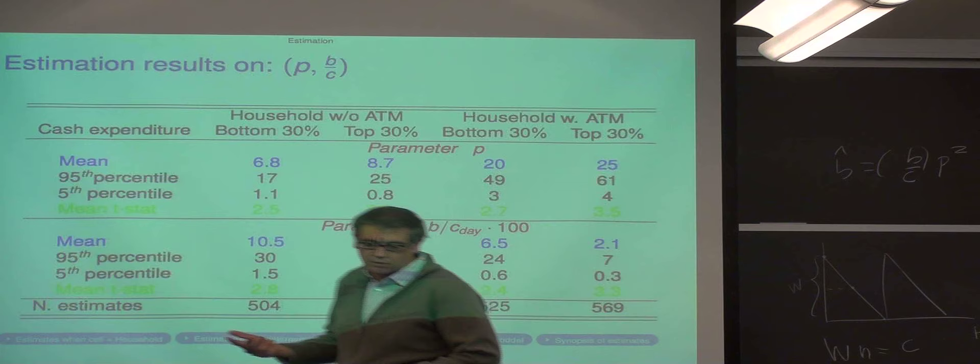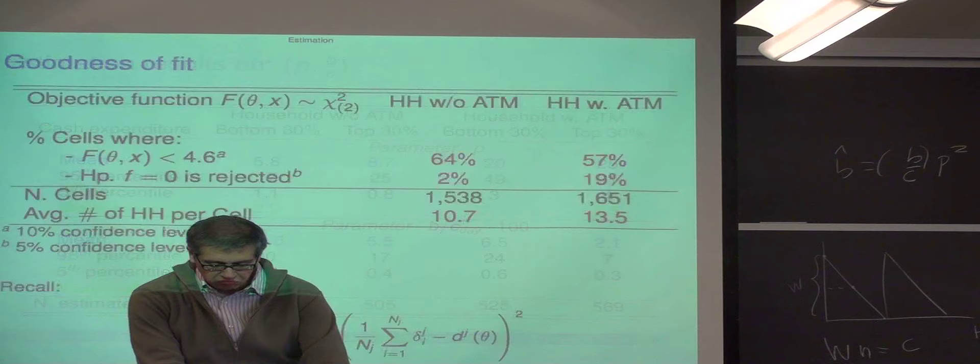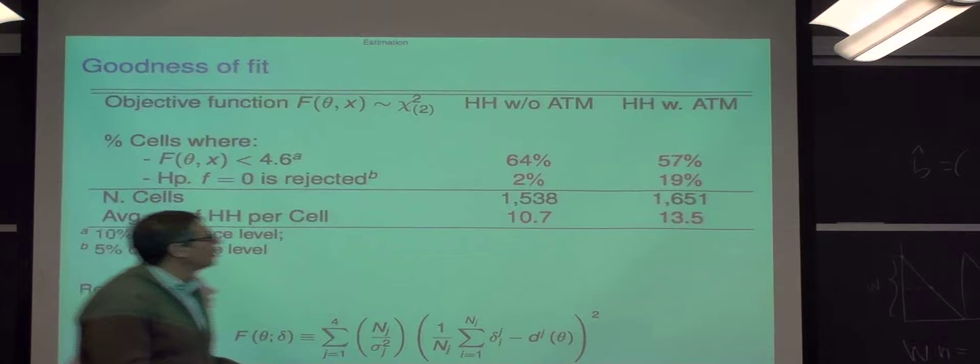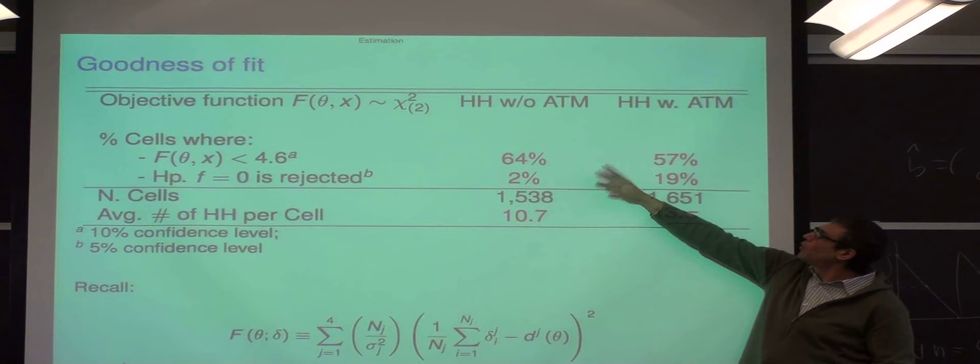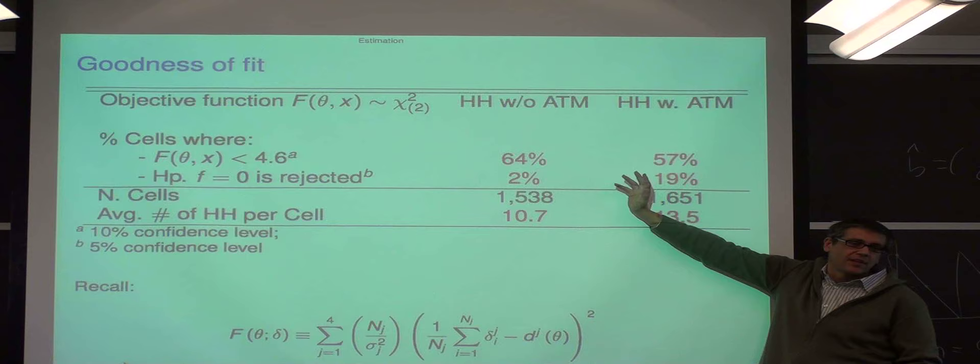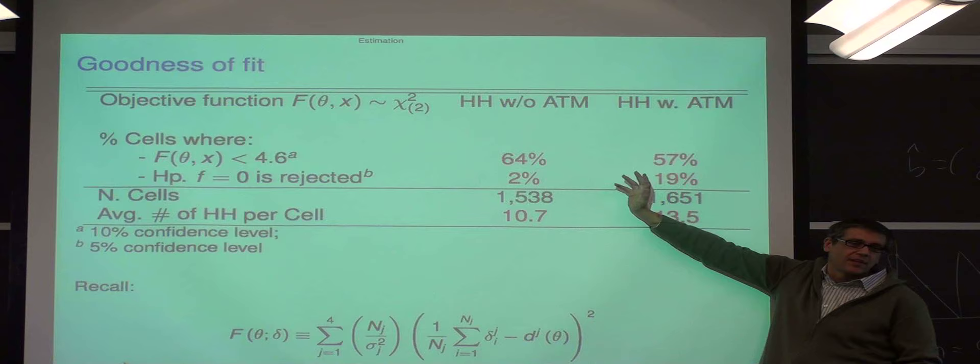We did many other types of estimates with the same type of model. This is something just to show it. But this is sort of like, we count for each cell how many of them we pass an overall defined test at 10%. For more than half, we don't reject the model. But if you're used to doing this type of estimate, it's not bad. It just tells you that there is some sort of consistency. It just tells you that this seems to be kind of consistent, broadly.